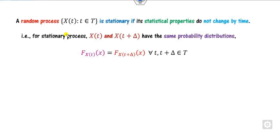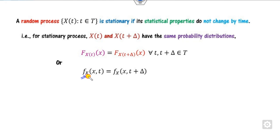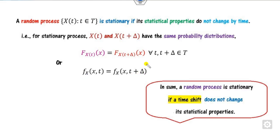For any stationary process X(t), the time-shifted process X(t + δ), where δ is any real number, has the same probability distribution as X(t). In terms of CDF, the CDF of X(t) equals the CDF of X(t + δ). In terms of PDF, the probability density function at time t equals that at time t + δ. So you can conclude that a random process is stationary if the time shift does not change its statistical properties.